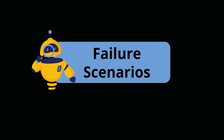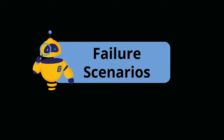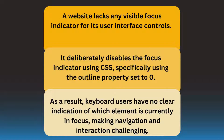Now let's look at some failure scenarios highlighting problematic approaches to visible focus indicators. In one instance, a website lacks any visible focus indicator for its user interface controls. It deliberately disables the focus indicator using CSS, specifically using the outline property set to 0. As a result, keyboard users have no clear indication of which element is currently in focus, making navigation and interaction challenging.